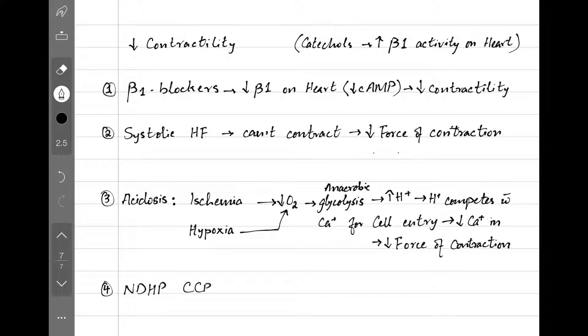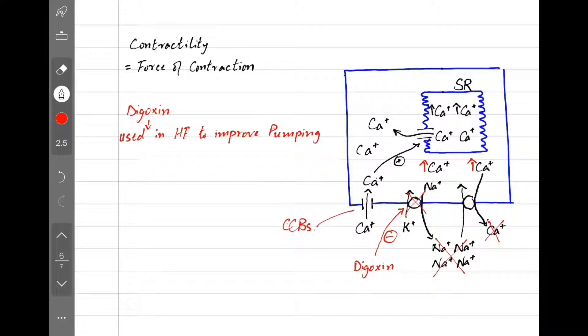Non-dihydropyridine calcium channel blockers, verapamil and diltiazem, block cytoplasmic calcium channels. Less calcium going in results in decreased contractility. I'm talking about this channel here.